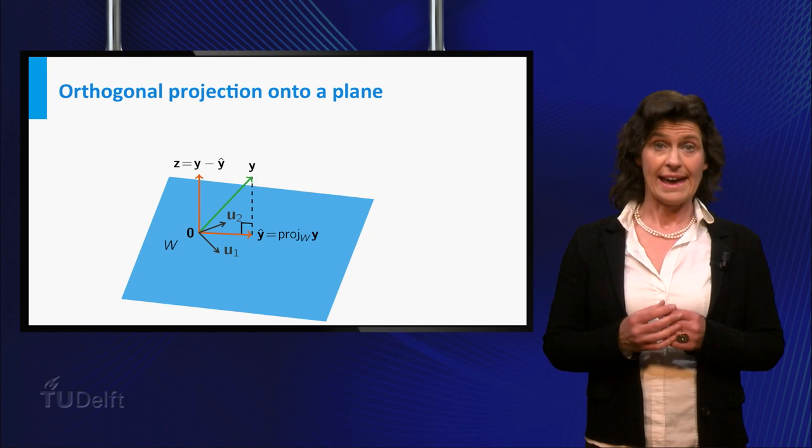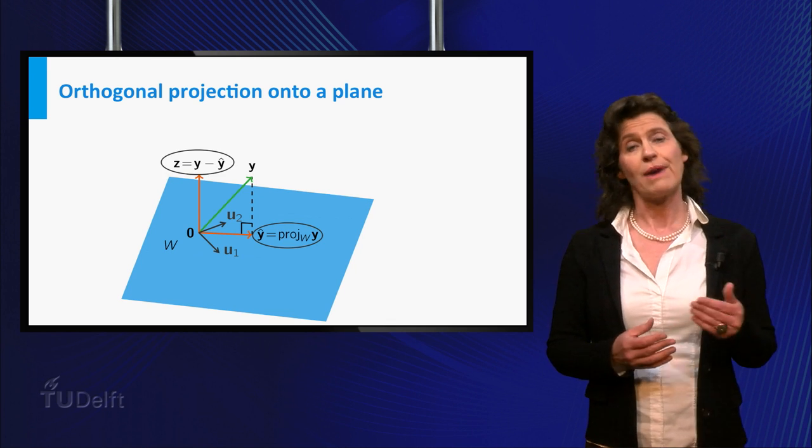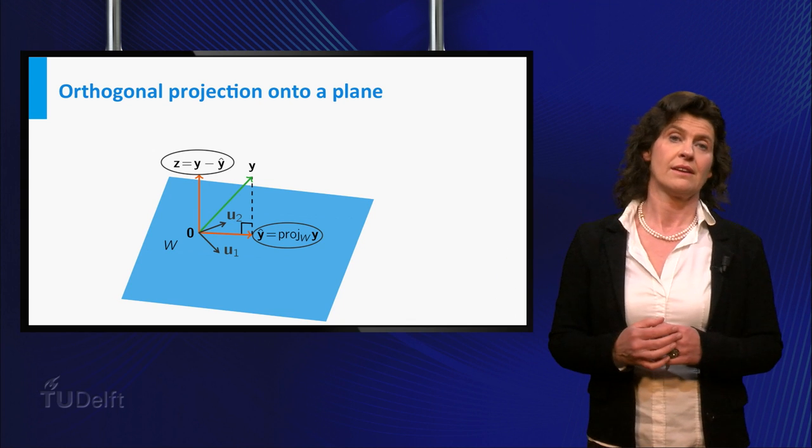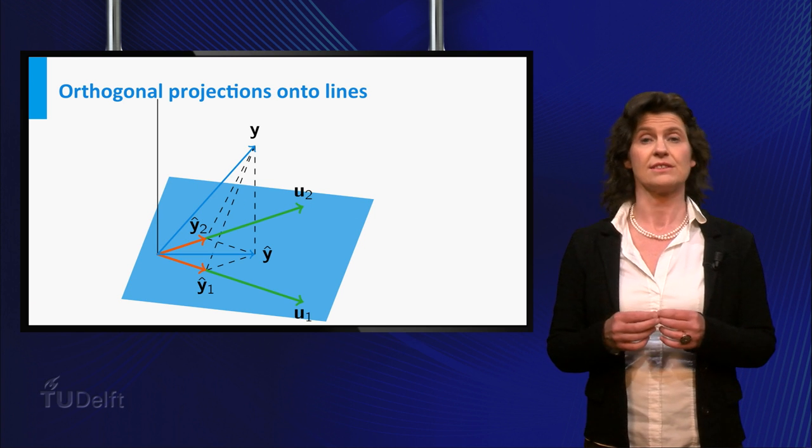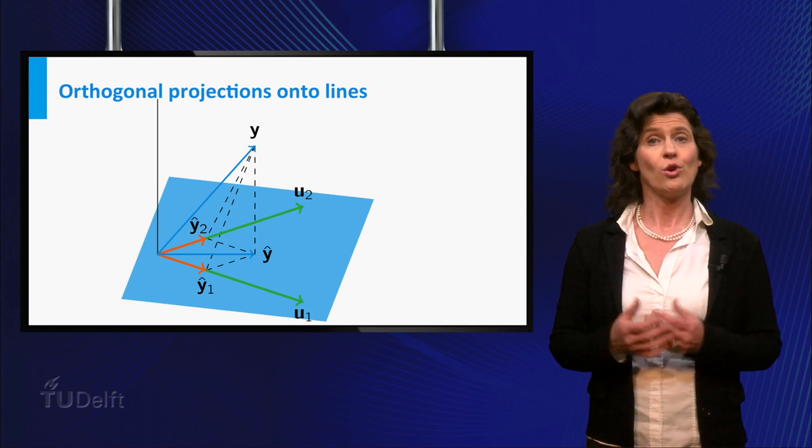You are looking for a vector Y hat in W, such that the difference Y minus Y hat is orthogonal to the plane. Now let's first find the orthogonal projections of Y onto the lines spanned by U1 and U2 respectively. You know how to do that.